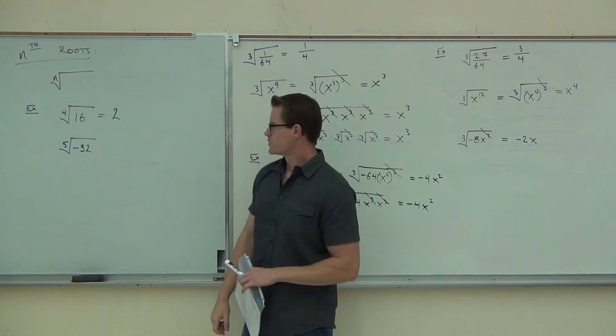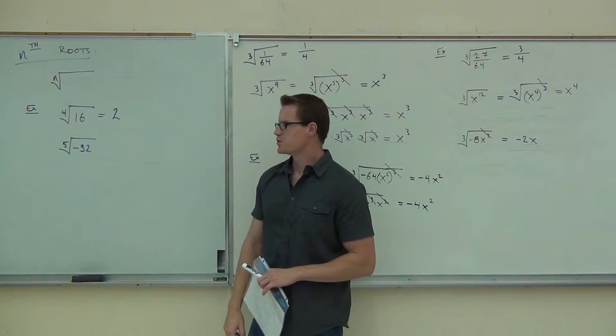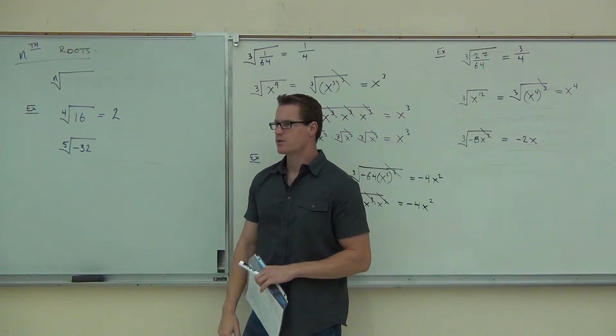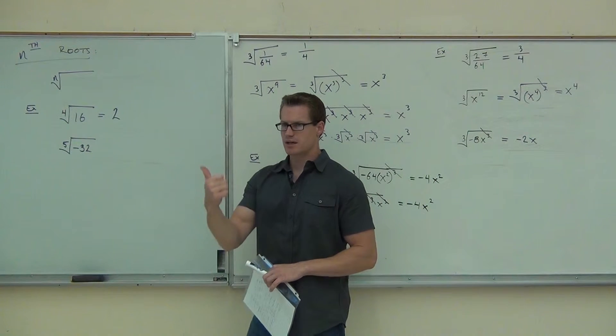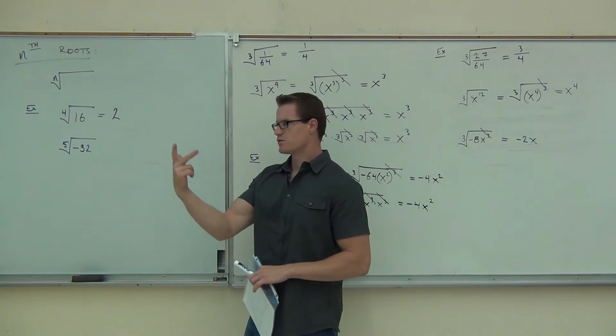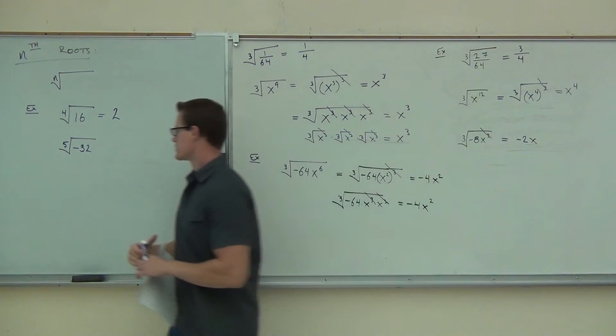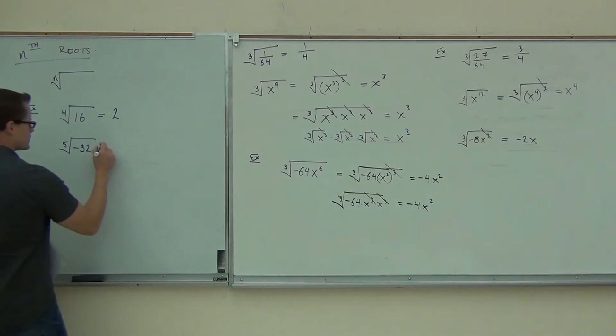How about the fifth root of negative 32? What do you think? Negative two. Because negative two times itself five times gives you negative 32.